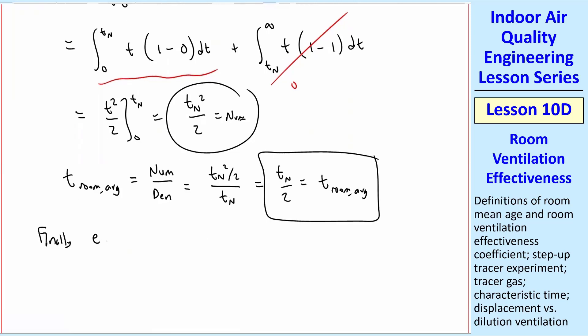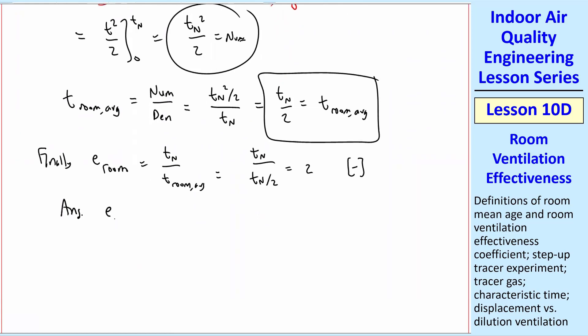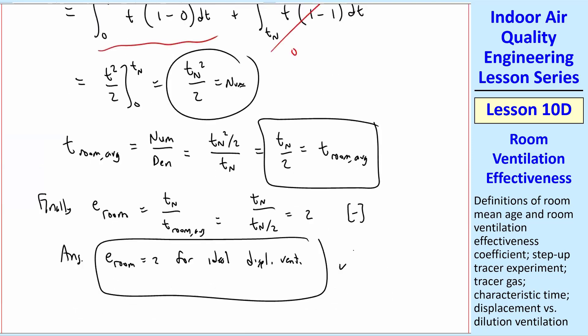And then finally, what we really want is E room TN over T room average equal TN over TN over 2, which is what we just found, and that gives you 2. And that's unitless, there's no dimensions, it's just a ratio of times. So our answer is E room equal 2 for ideal displacement ventilation, and that agrees with what I had written. E room is 2 for ideal displacement ventilation. So we've just kind of double-checked that with all this math.